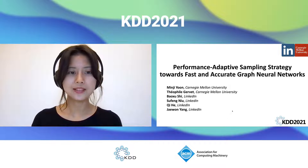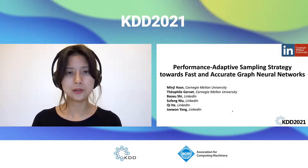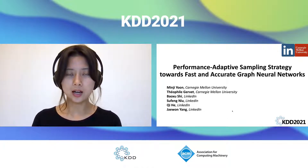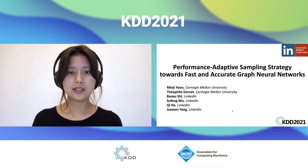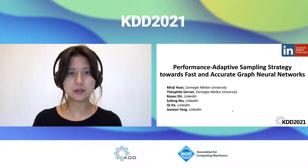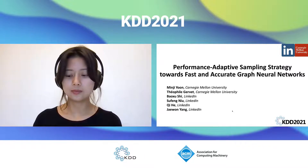Hi everyone. I'm Min Ji-yeon from Carnegie Mellon University. Today, I'm going to talk about our work, in collaboration with LinkedIn: Performance Adaptive Sampling Strategy for Fast and Accurate Graph Neural Networks.